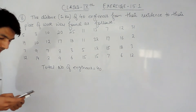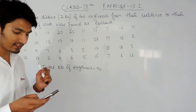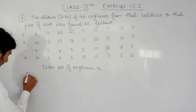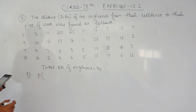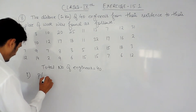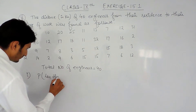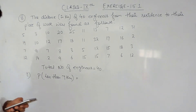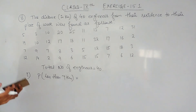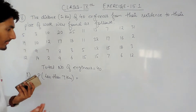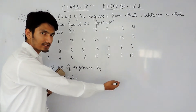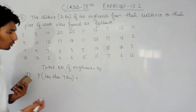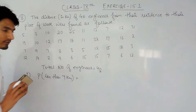Now I have to find the probability for the first case — that the engineer lives less than 7 km from her place of work. The formula to find the probability will remain the same: the number of trials in which the event has occurred upon the total number of trials. The total number of trials here is the total number of engineers, which is 40.